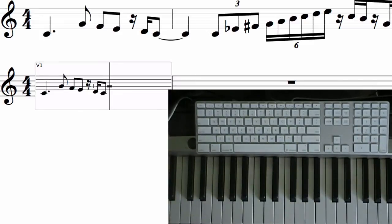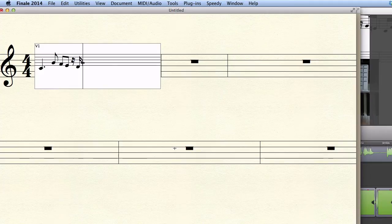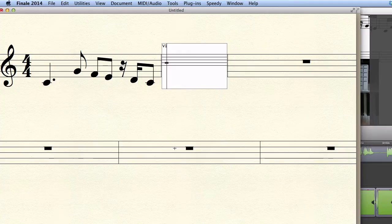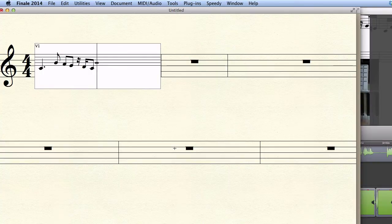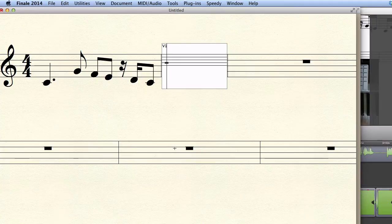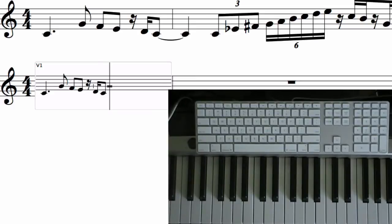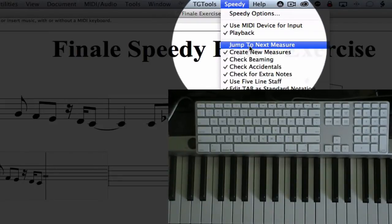Once you reached the end of your measure, Finale may jump automatically to the next measure or, if not, you may have to do this manually by pressing the right arrow key. How Finale behaves depends on your speedy entry tool preferences. When you click on the speedy menu you see an entry called jump to next measure. Check or uncheck it depending on your preferences.